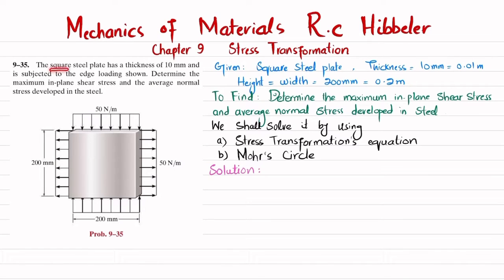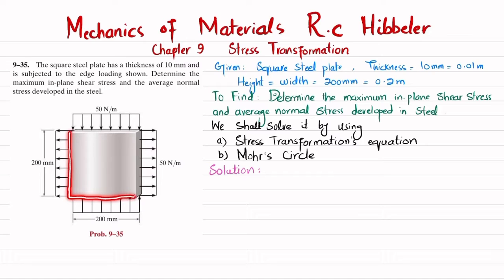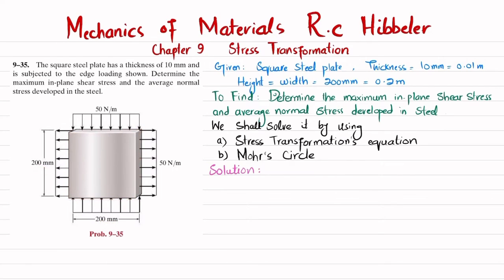The statement is: the square steel plate has a thickness of 10 mm and is subjected to edge loading as shown. Determine the maximum in-plane shear stress and average normal stress developed in the steel. You can see this is the square steel plate of 200 by 200 mm, with a thickness of 10 mm and edge loading shown.